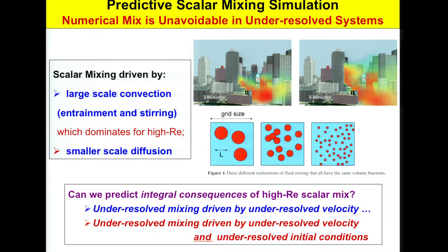My focus is on complex systems. Suppose you're simulating transport of a toxic substance in an urban environment — you might have only 10 to 20 cells across a street, with no ability to do a well-resolved simulation between buildings. At the other extreme, suppose this is your grid size and you want to model volume fractions inside for some material. The question is: what integral consequences of high Reynolds number scalar mixing can you predict in some sensible simulation framework?